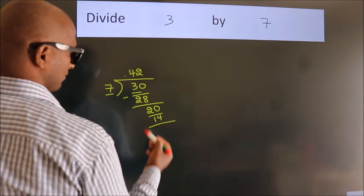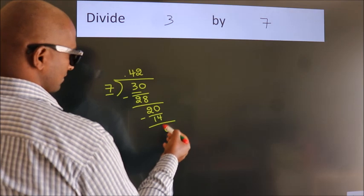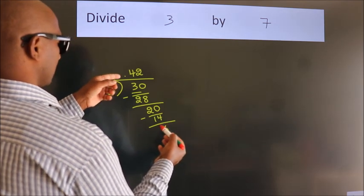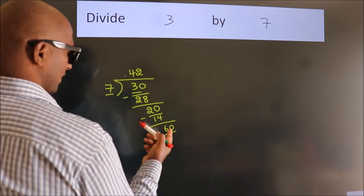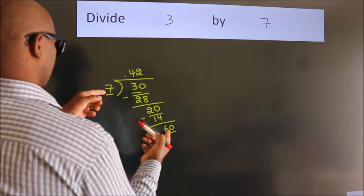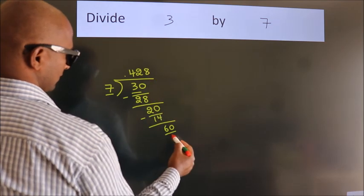Now, we subtract. We get 6. After this, we already have the decimal. So, directly take 0. So, 60. A number close to 60 in 7 table is 7 eights, 56.